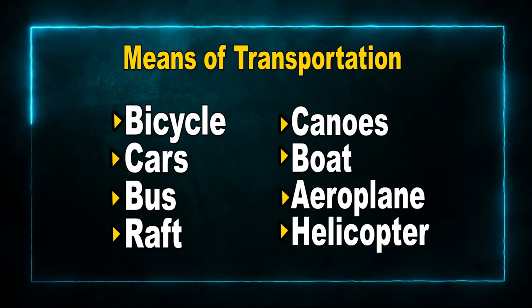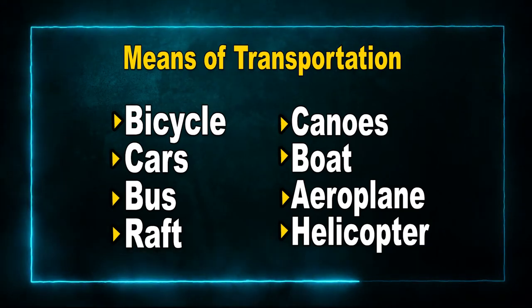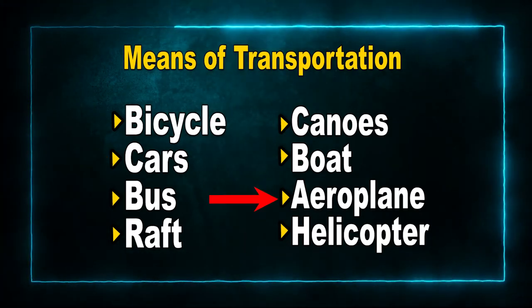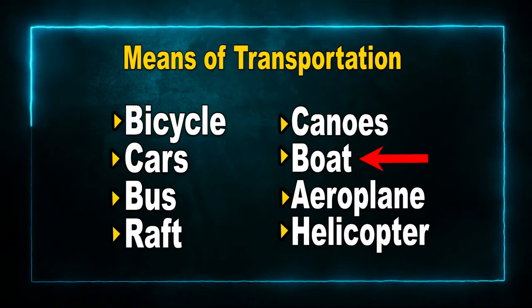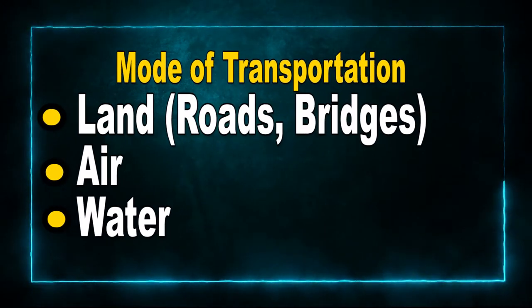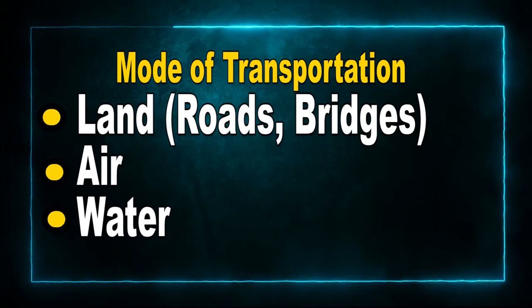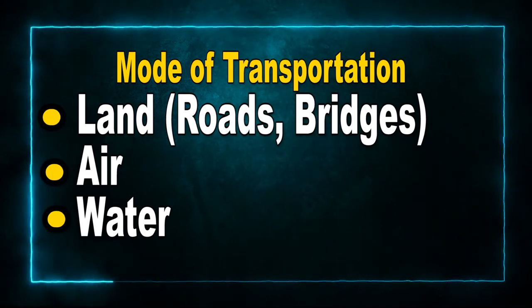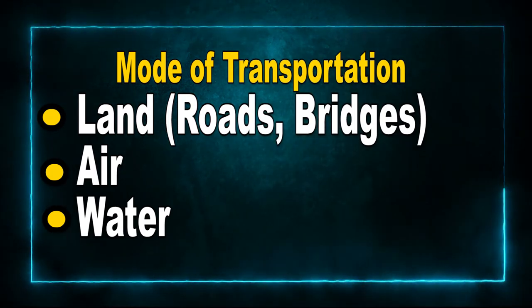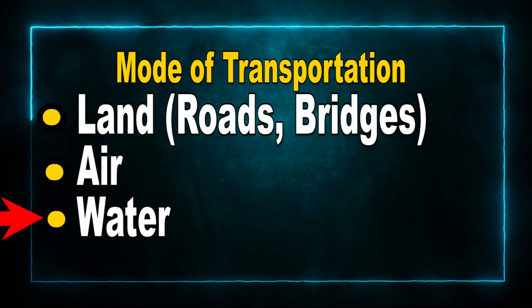The means of transportation is the type of vehicle used — for example, car, airplane, or boat. The mode of transportation refers to the medium in or on which the movement takes place — for example, land, air and water.